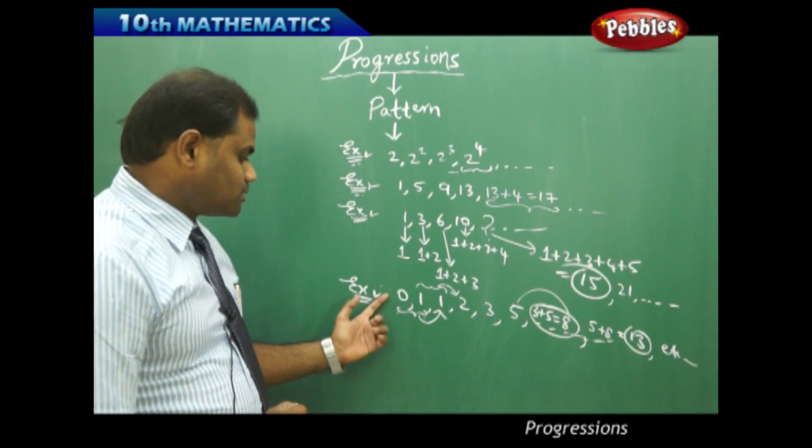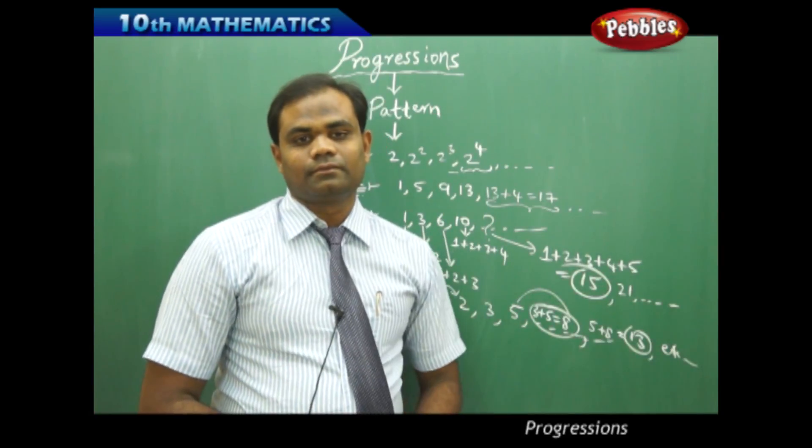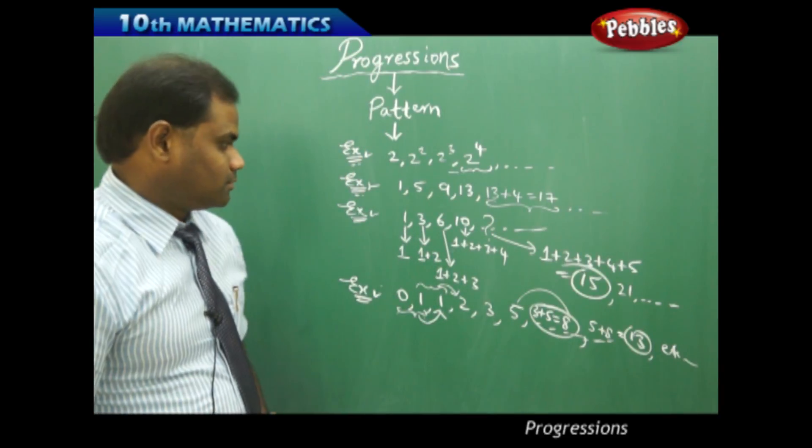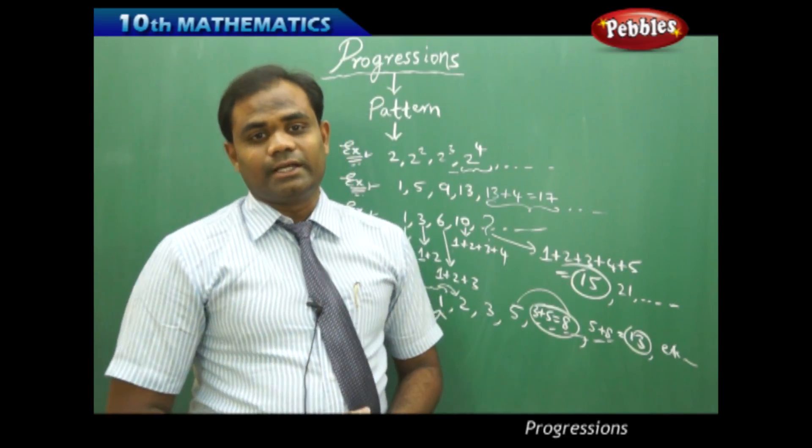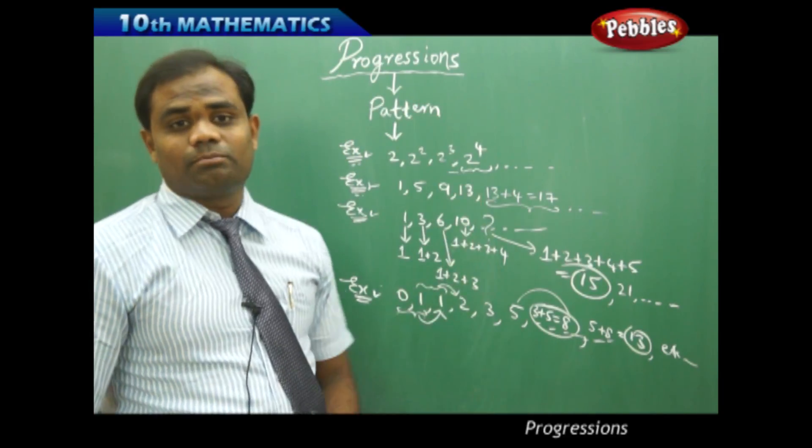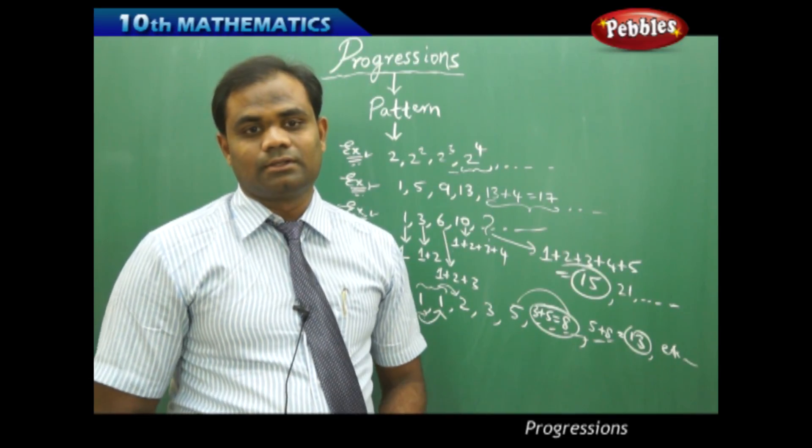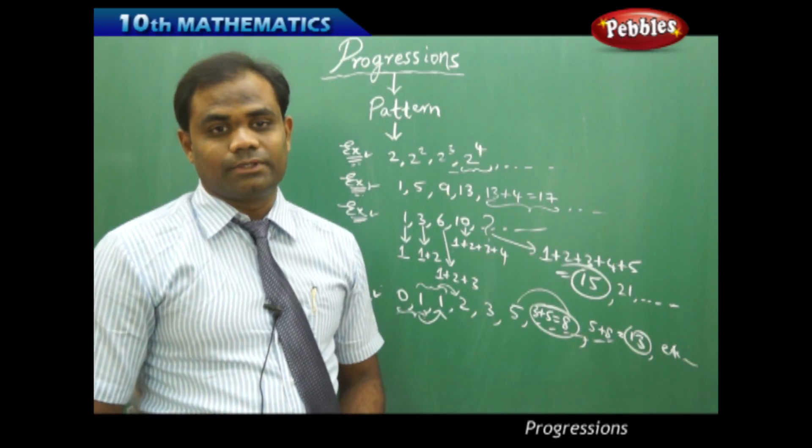The terms being 0, 1, 1, 2, 3, 5, 8, 13, etc., is called a Fibonacci sequence. So this kind of different types of sequences is what we are going to discuss in this today's session of progressions. The other word for progressions is following of a pattern. So let's see the different problems followed with different patterns out here.